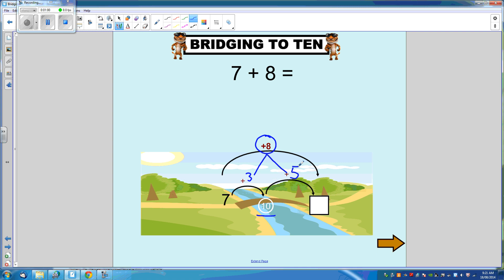So we've stopped at 10. 10 plus 5 equals 15. So our answer to 7 plus 8 is 15.